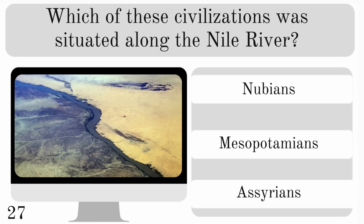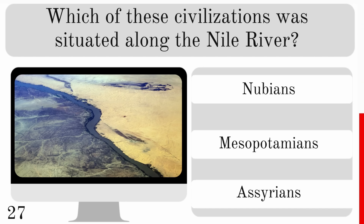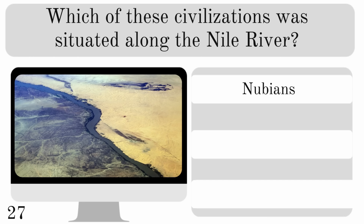Which of these civilisations was situated along the Nile River? Nubians, Mesopotamians or Assyrians? And the answer — Nubians.